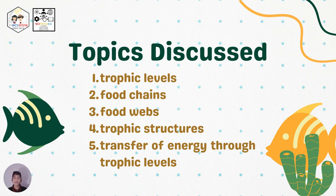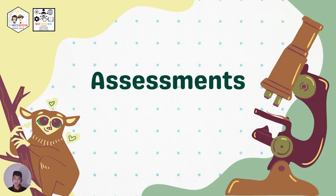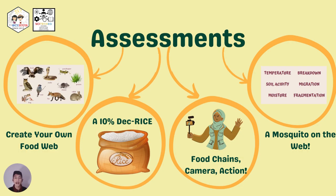To summarize the concepts we have discussed, we tackled: trophic levels, food chains, food webs, trophic structures, and most importantly the transfer of energy through trophic levels. We will now go to the assessment. You can find this on our website at Filipino Science Hub, where we have formative and authentic assessment tools including 'Build Your Own Food Web,' '10% Decrease,' 'Food Chains Camera Action,' and a worksheet called 'Mosquito on the Web.'